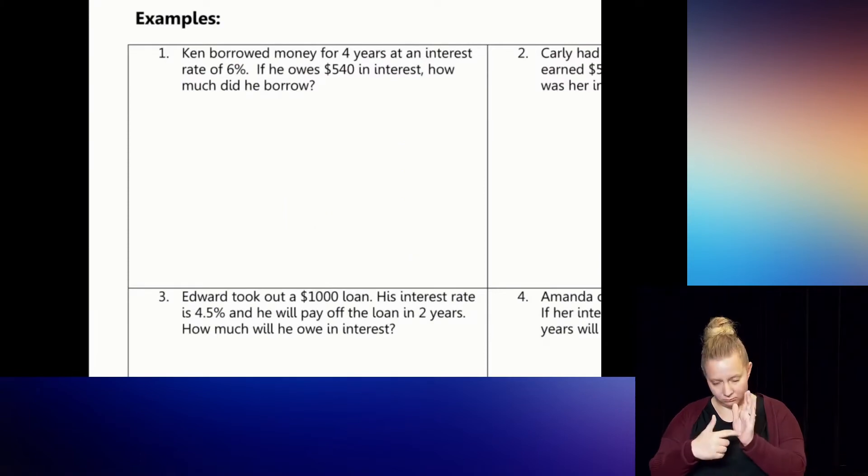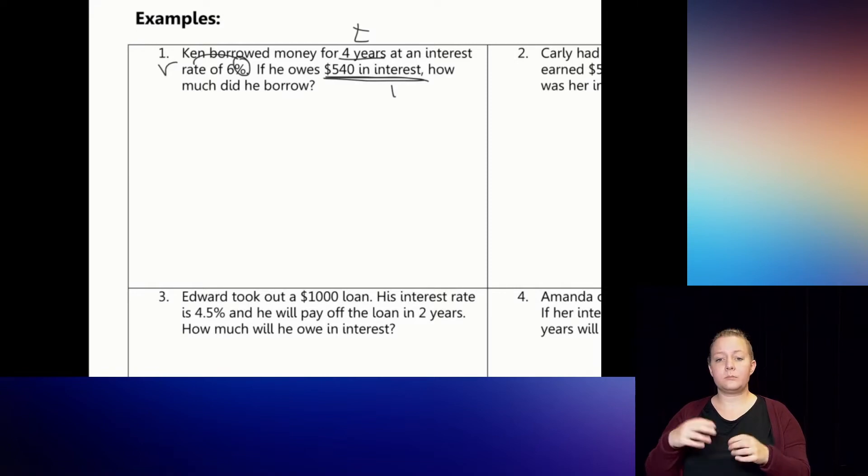Example 1 says, Ken borrowed money for four years at an interest rate of 6%. Well, here I see years, so I know this is going to be my T, my time. Here, this is the percent sign, so I know that goes with the rate. He owes $540 in interest, so that money is going to be the I. And how much did he borrow? So the P is the question. The P is the part we don't know.